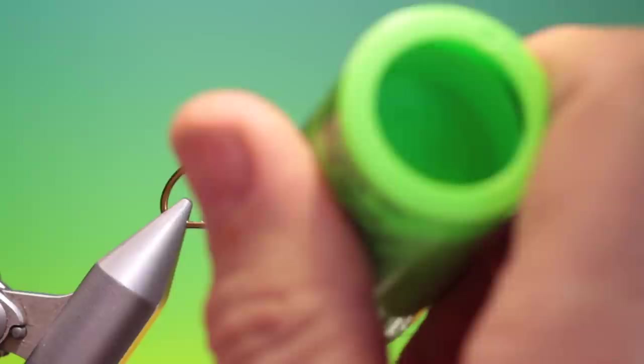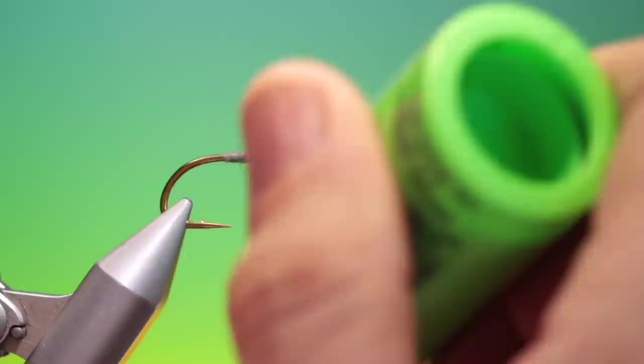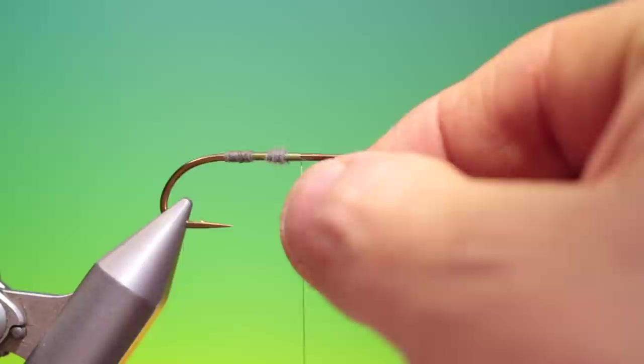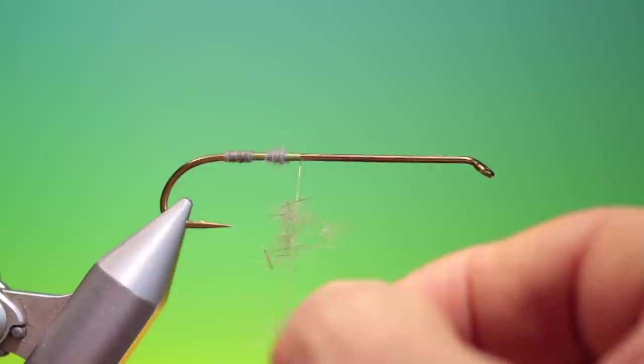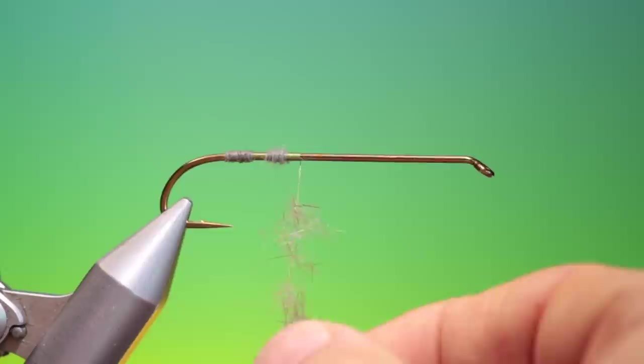And then go a little bit further. Then we use a touch dubbing. So we take a tacky wax and all we want to do is just put a little bit of that on the tying thread.